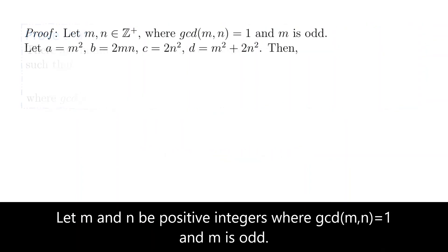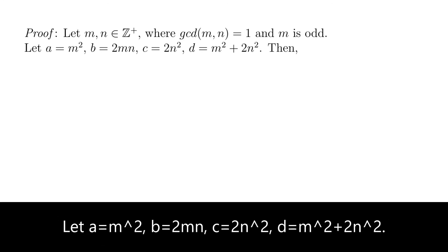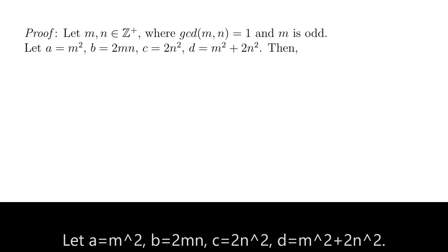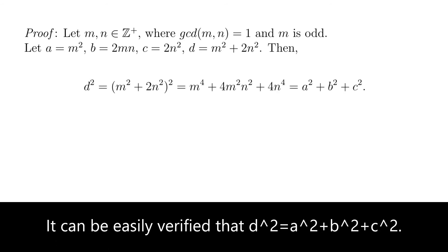The proof. Let M and N be positive integers, where GCD of M and N equals 1, and M is odd. Let A equals M square, B equals 2 times M times N, C equals 2 N square, and D equals M square plus 2 N square. It can be easily verified that D square equals A square plus B square plus C square.